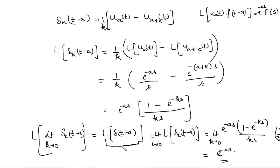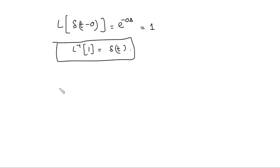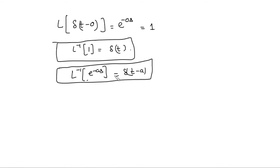So the Laplace transform of the Dirac delta function is e to the power minus as. Even though this function is not piecewise continuous, we can still find its Laplace transform. When a is zero, this is e to the power minus 0 times s, which equals 1, meaning the inverse Laplace of 1 is the Dirac delta function at zero. Also, the inverse Laplace of e to the power minus as is the Dirac delta function at a, which can be used to find inverse Laplace transforms.